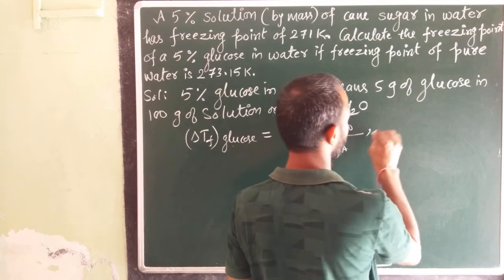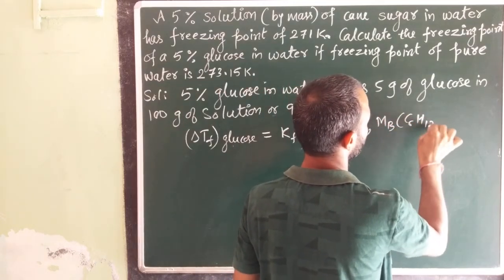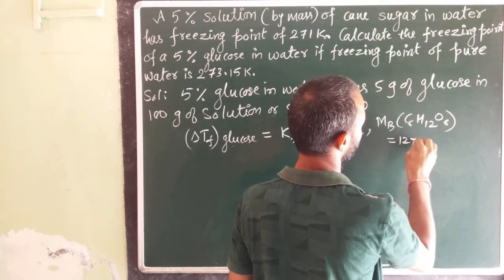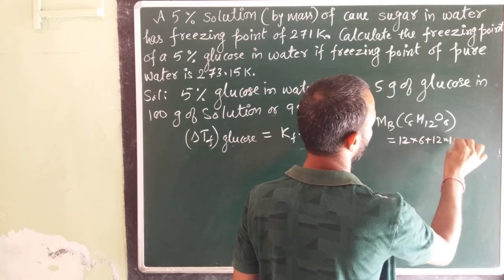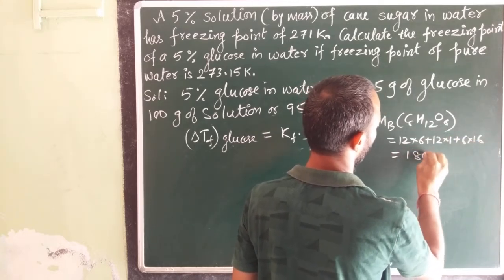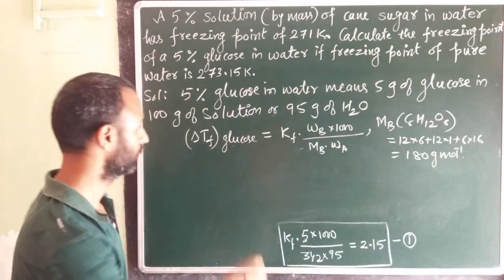What is MB? MB of glucose, C6H12O6, means 12 into 6 plus 12 into 1 plus 6 into 16, it comes out to be 180 gram per mole.